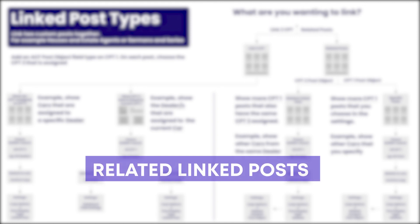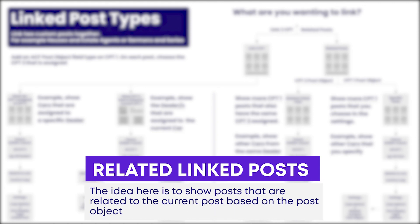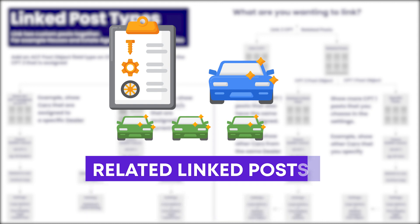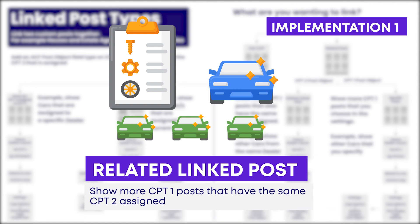Next up, we've got the related link posts. The idea with these is to show posts that are related to the current post based on that post object we discussed earlier. The post object is what creates the link between two different post types. You can have a related link post that will show more custom post type ones — the cars — that are assigned to the same custom post type two, which is the dealer. So maybe you have a bar at the bottom of the single car detail page that lists other cars sold by the specific dealership.